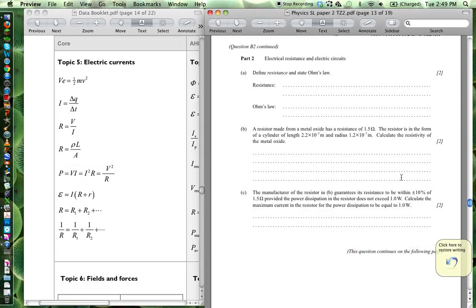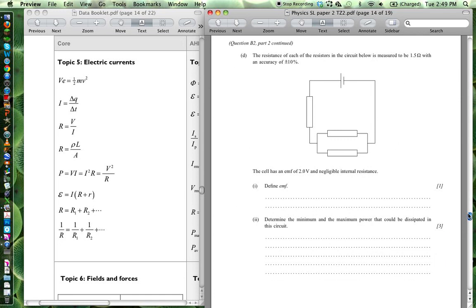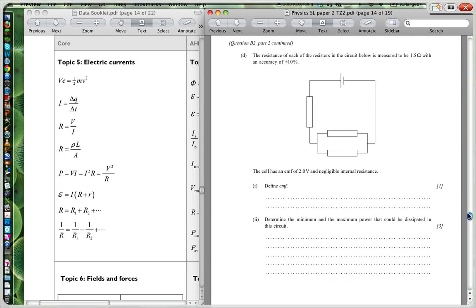Going over to the next side over here. The resistance of each of the resistors in the circuit below is measured at 1.5 Ohms with an accuracy of plus minus 10%. Define the EMF. Now the EMF, when it says over here, the cell has an EMF of 2 volts.